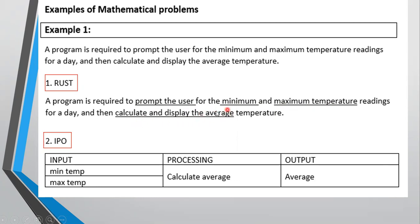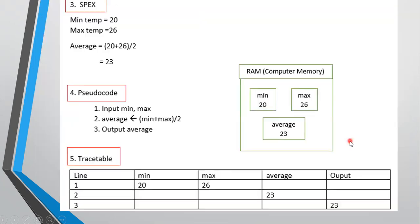To identify the IPO diagram: input is your minimum and maximum temperature. Processing is to calculate the average, and your output is the average. For a specific example, let the minimum temperature be 20 and the maximum be 26. The average is found by adding both temperatures and dividing by two, giving an answer of 23.